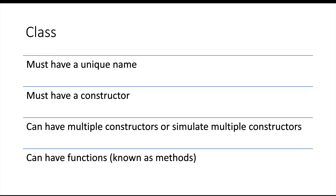So talking about what classes must have: first, classes must have a unique name. You cannot have two categories of the same name, because much like in the real world, if we had two categories called 'tree', the computer — like we would — could not discern between the two. If we had two categories revolving around trees, we'd have to call them tree one and tree two, or tree A and tree B. They must also have a constructor, which we'll talk about in a moment.